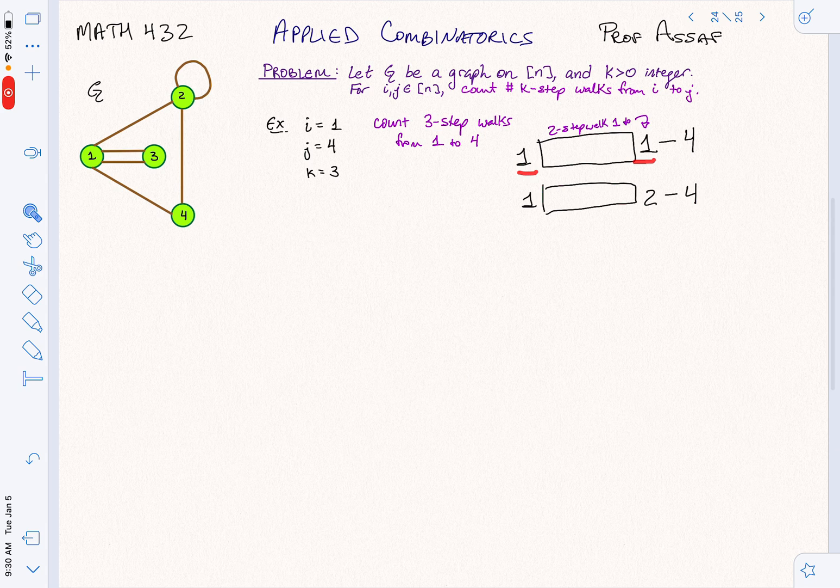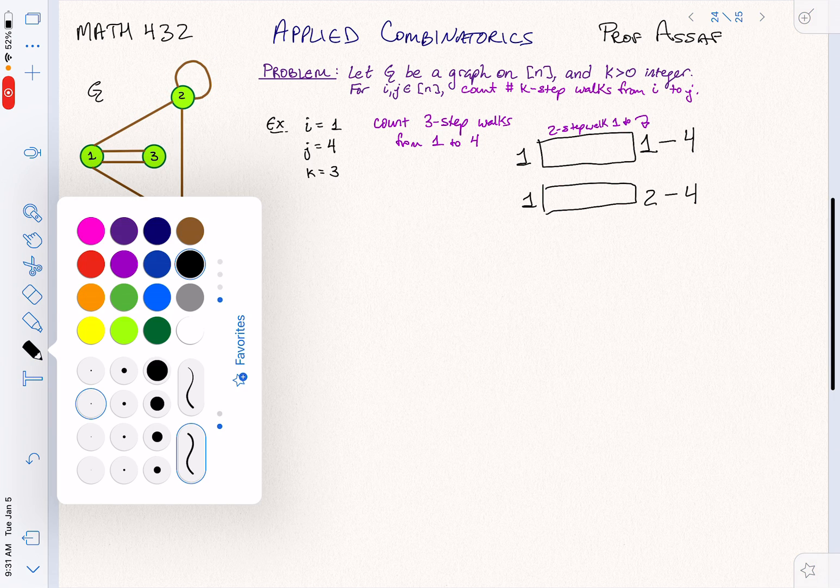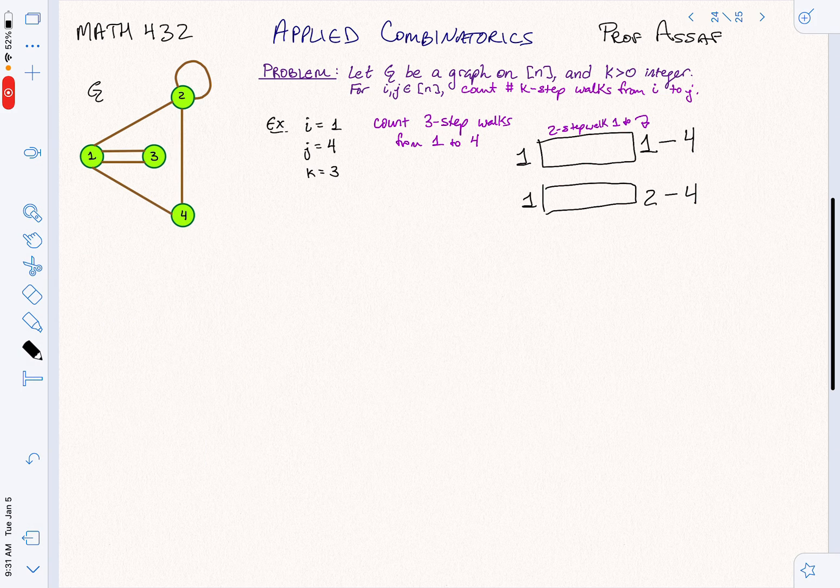So how many are there? So we want to take two-step walks from 1 to itself. Well, let's see how we can do that. Actually, let's do this one first, 1 to 2. That seems a little easier. So if we're going to go from 1 to 2 in two steps, how can we do it? We can start at 1, go to 2, and then take that loop.